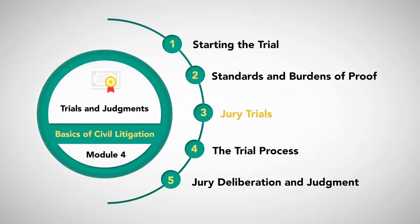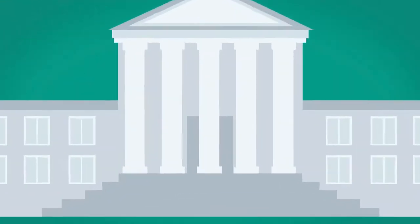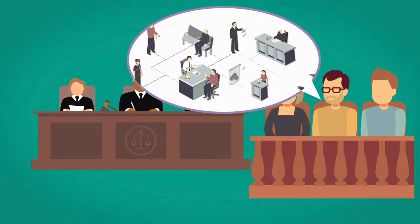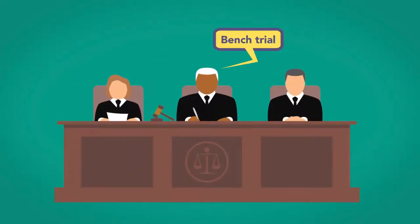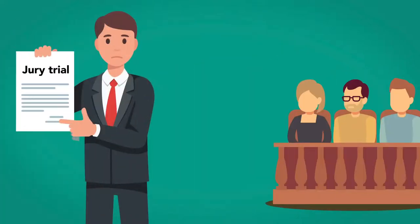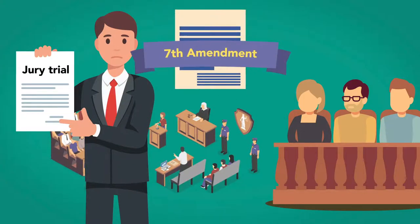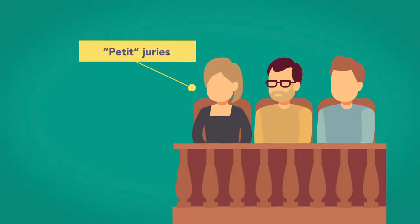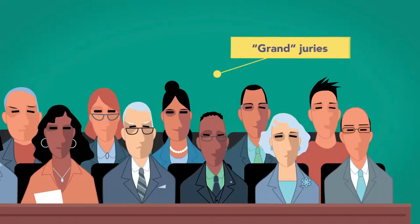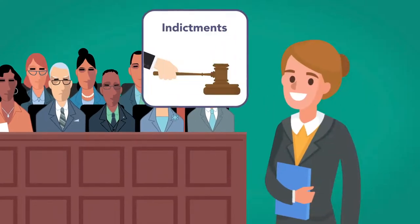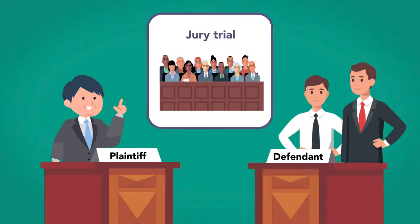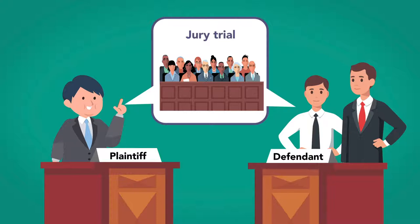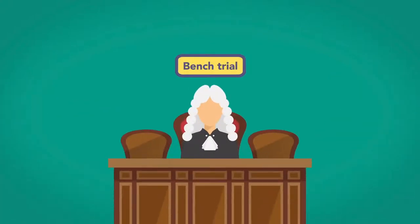Before a trial can begin, the court must decide if the procedure will be decided by a jury or will be heard by the judge alone — the latter is called a bench trial. The right to a jury trial, even in civil cases, is guaranteed by the Seventh Amendment to the Constitution. Trial juries are known as petite juries, as opposed to grand juries, which are used by prosecutors to obtain indictments. In a civil case, both the plaintiff and the defendant have a right to demand a jury trial. If neither demands a jury trial, a bench trial may be held instead.